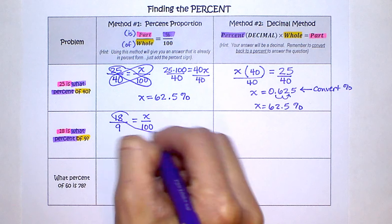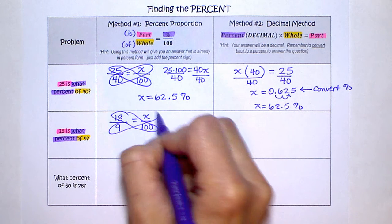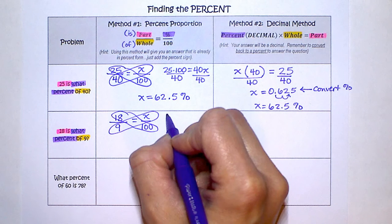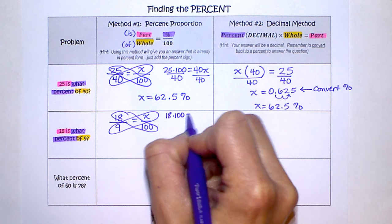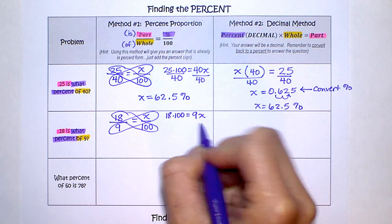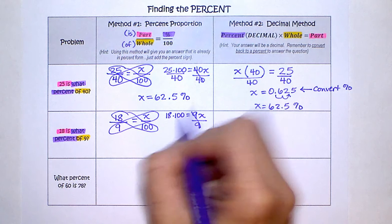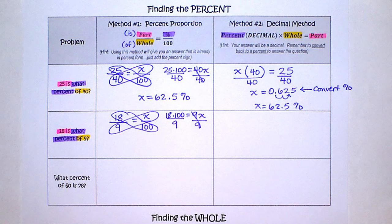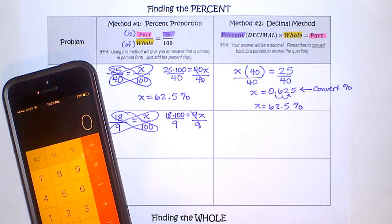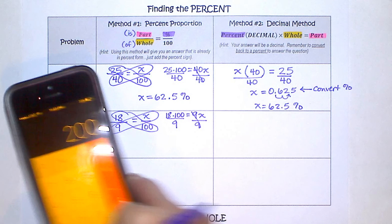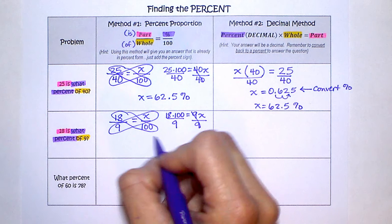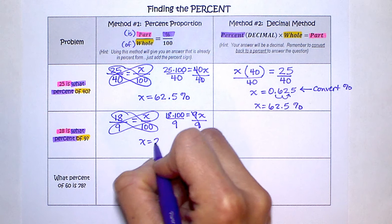Do your cross products, and we have 18 times 100 equals 9 times x. Then to solve for x, we're going to divide both sides by 9. So on my calculator, 18 times 100 divided by 9, that's 200 percent. So x equals 200 percent.